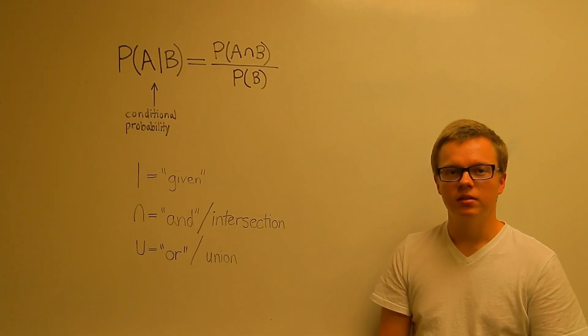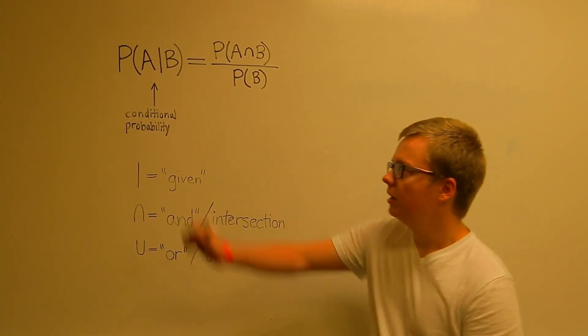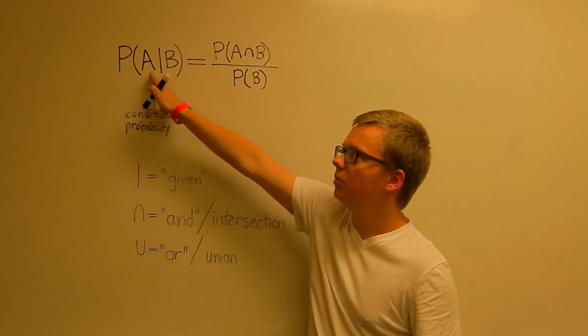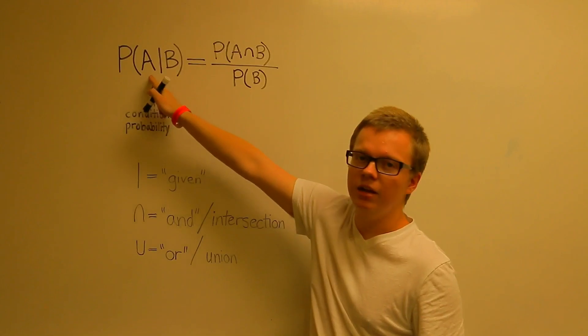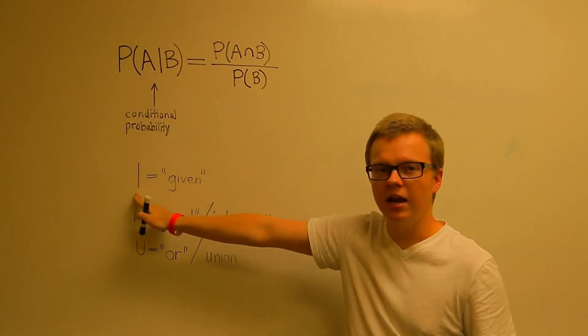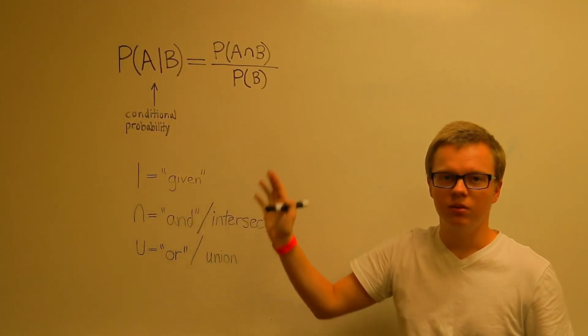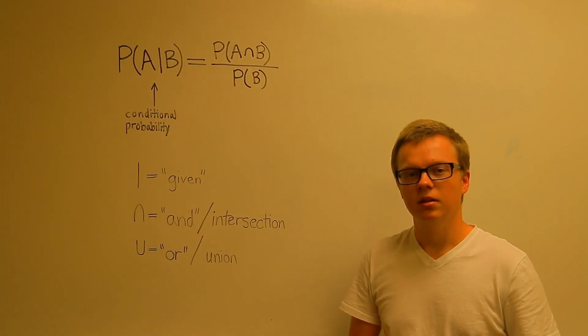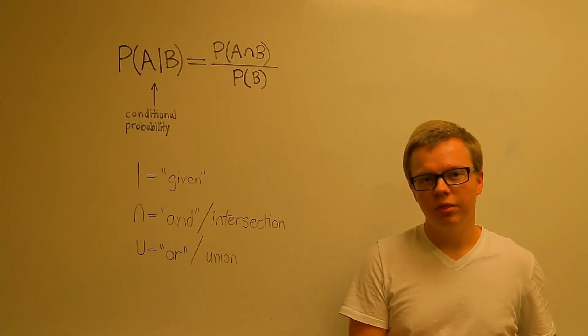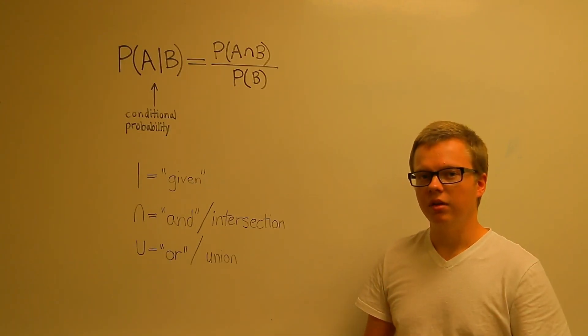So the first question is what is conditional probability and here's what it looks like: the probability of A slash B. This slash translates as the word given, so a conditional probability is the probability of one thing given that another thing happens.